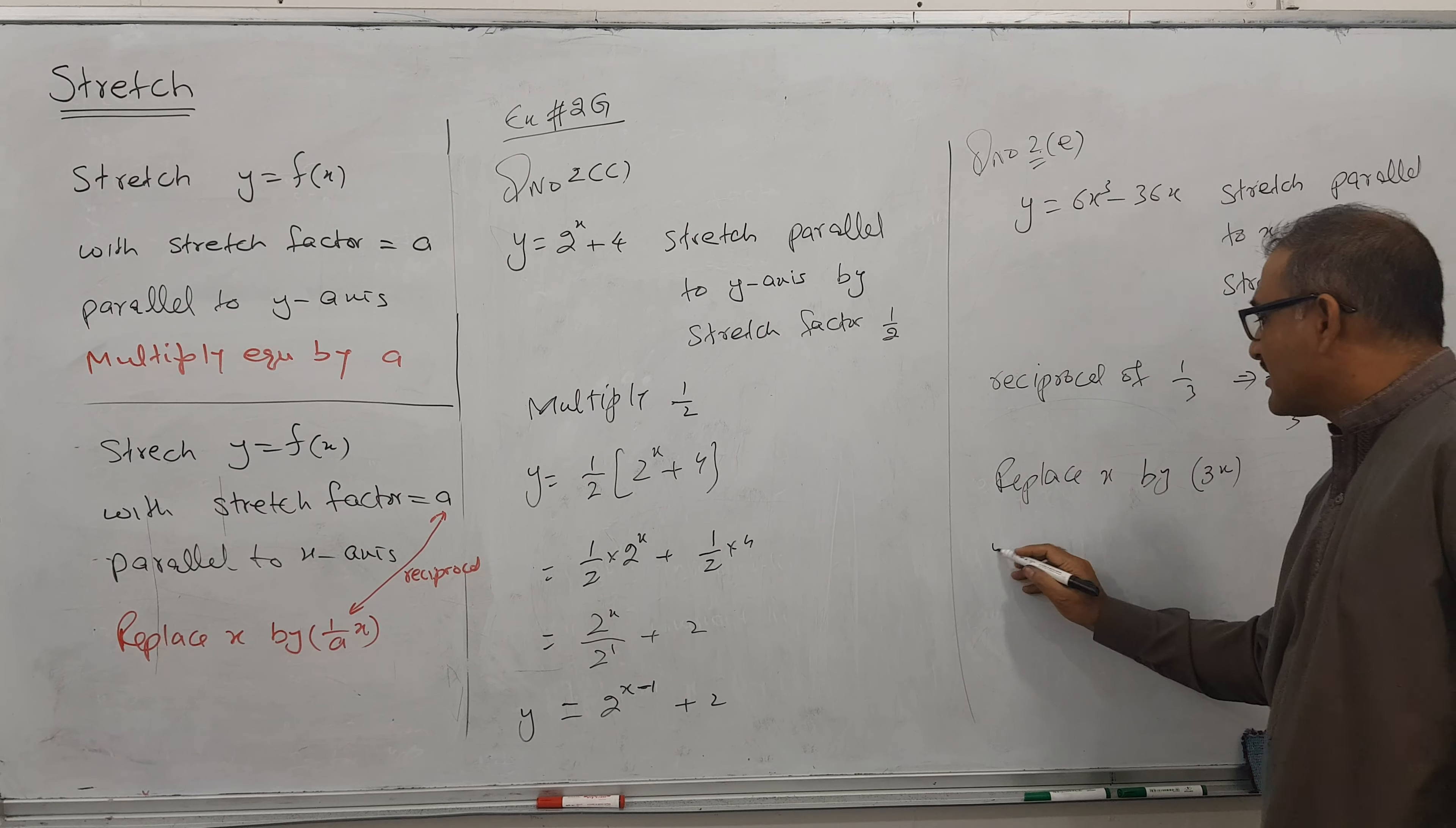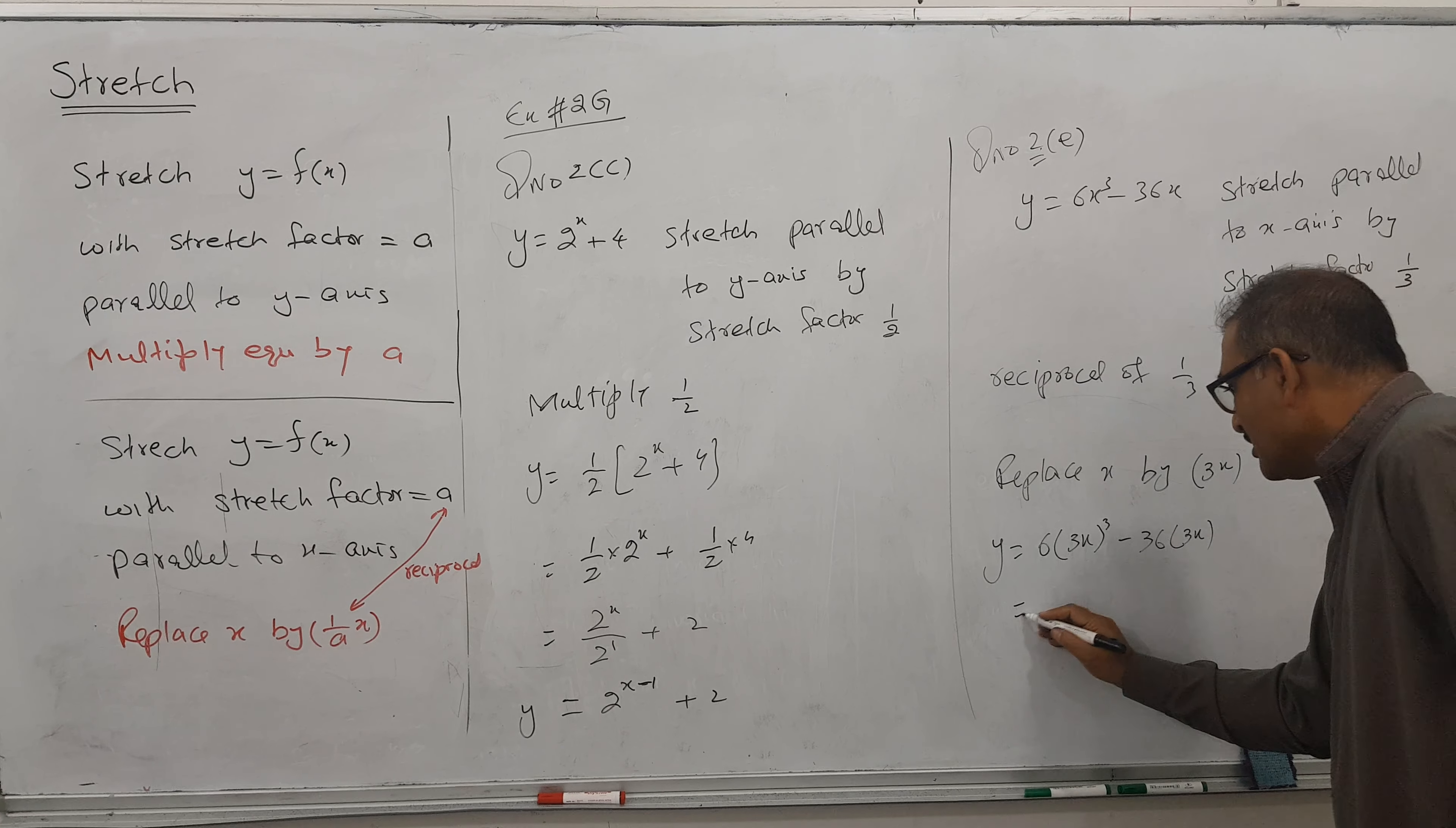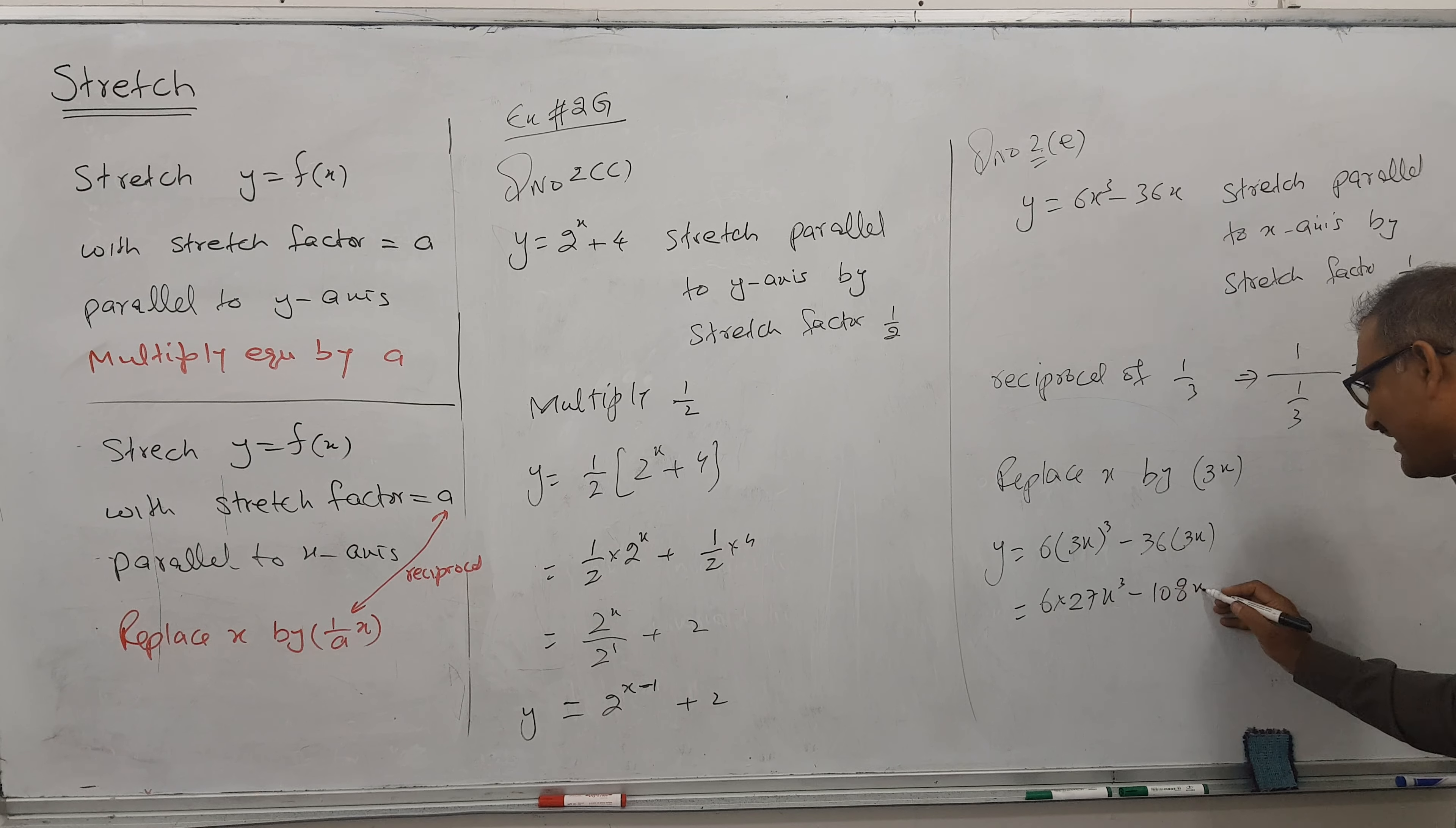So let's see what answer comes. So 6(3x)³ - 36 + 3x. So 6 × 27x³ - 108x.